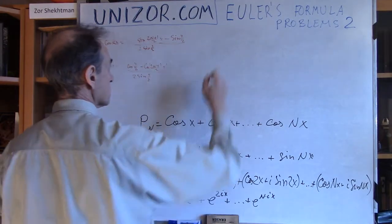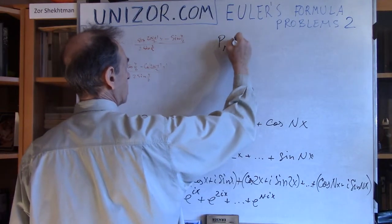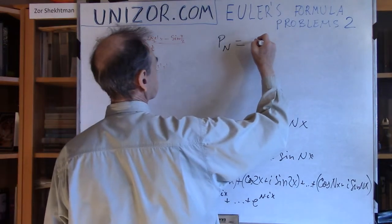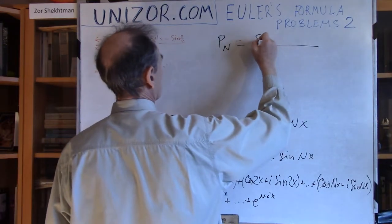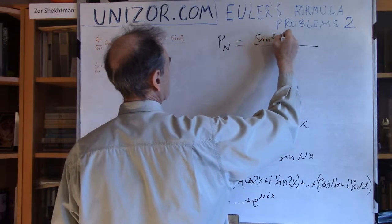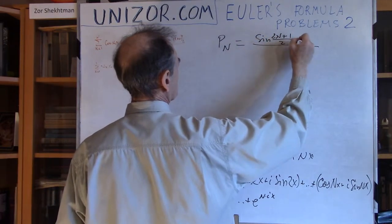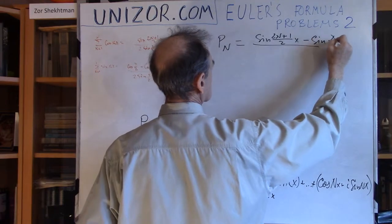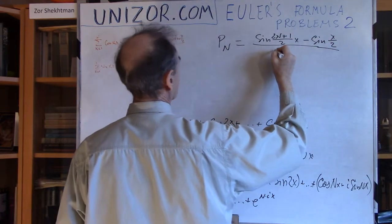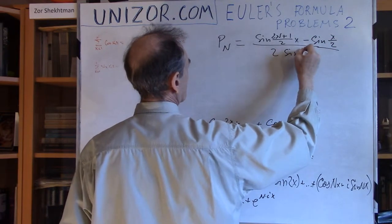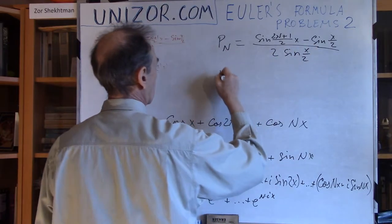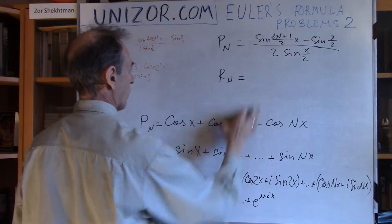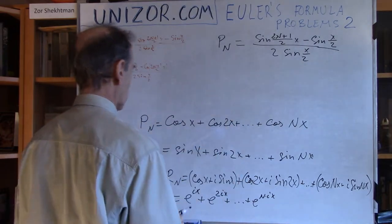The final result for the sum of cosines, Pn, is equal to: sine of ((2n+1)/2 · x) minus sine(x/2), divided by 2·sine(x/2). And Rn, the sum of sines — well, let's wait for Rn; we'll talk about that later.